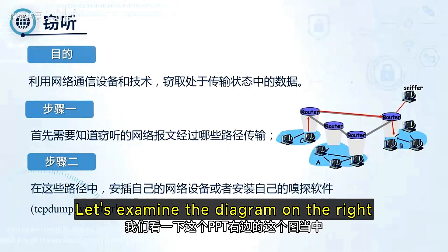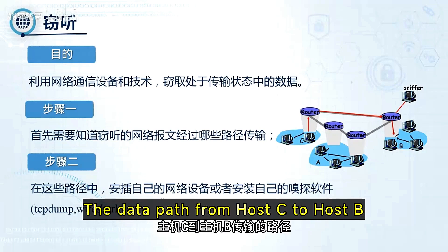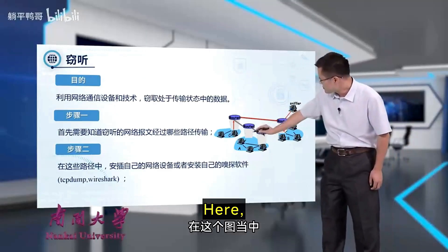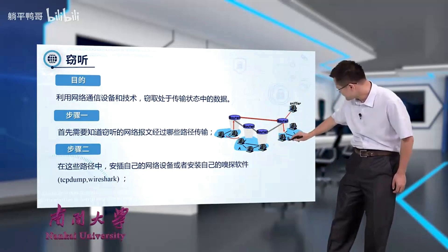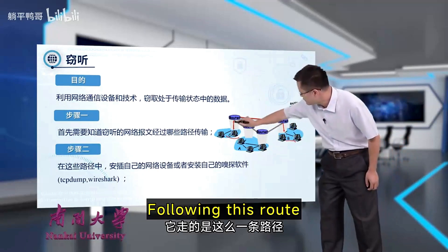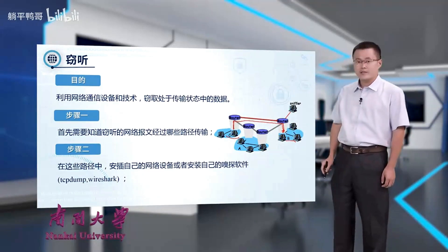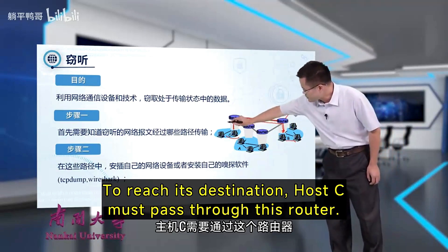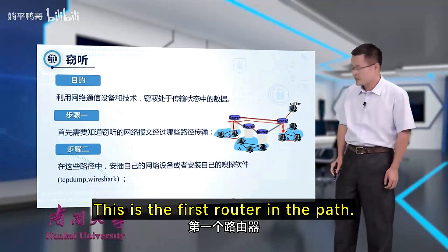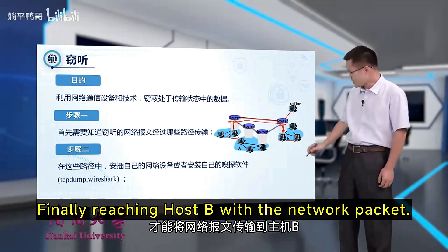Let's examine the diagram on the right. We'll focus on the data path from host C to host B. Host C transmits data to host B. Following this route, host C must pass through a first router, then it passes through a second router, finally reaching host B with the network packet.